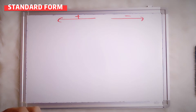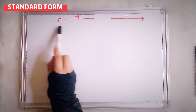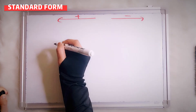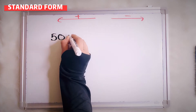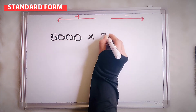Okay, so I explain again: if you move to the right side, your sign will be negative. If you move to the left side, your sign will be positive. Let's say I give you here 5,000 multiplied by 3,000.